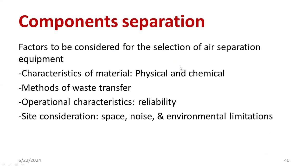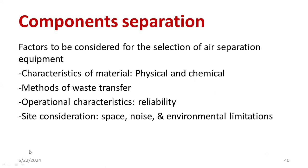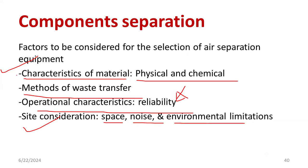While separating the waste we need to consider the method called air separation. The following factors are considered for selection of an air separator: first, you have to take care of the characteristics of material — for example, liquid type of waste is not viable for this method. Then waste transfer method you are adopting, operational characteristics, and reliability also matter. Site considerations like space, noise, and environmental limitations must all be considered before procurement of air separator equipment. Also the area where you are establishing this type of equipment matters a lot.